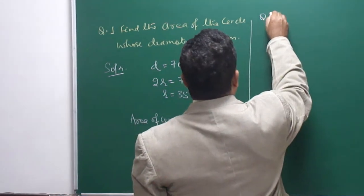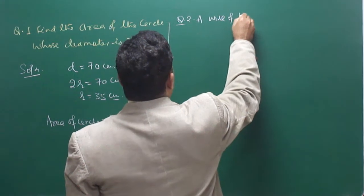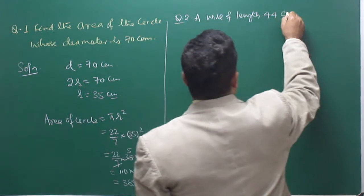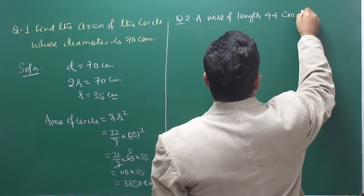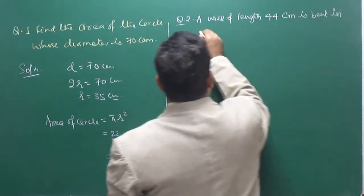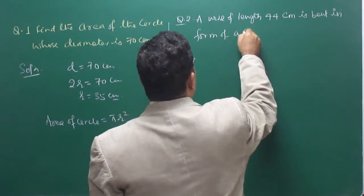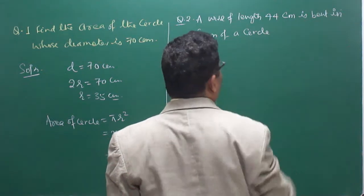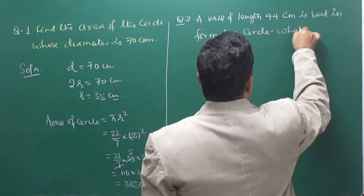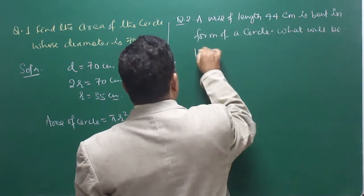Second question: a wire of length 44 cm is bent in the form of a circle. What will be the area of that circle?